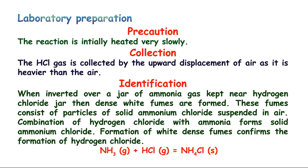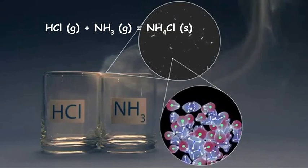The identification of HCl gas is very interesting. If we bring a paper initially dipped in ammonia in front of the HCl gas jar, a white fume is formed — this is ammonium chloride suspended in air. This is an example of a reaction where two gaseous particles form a solid.